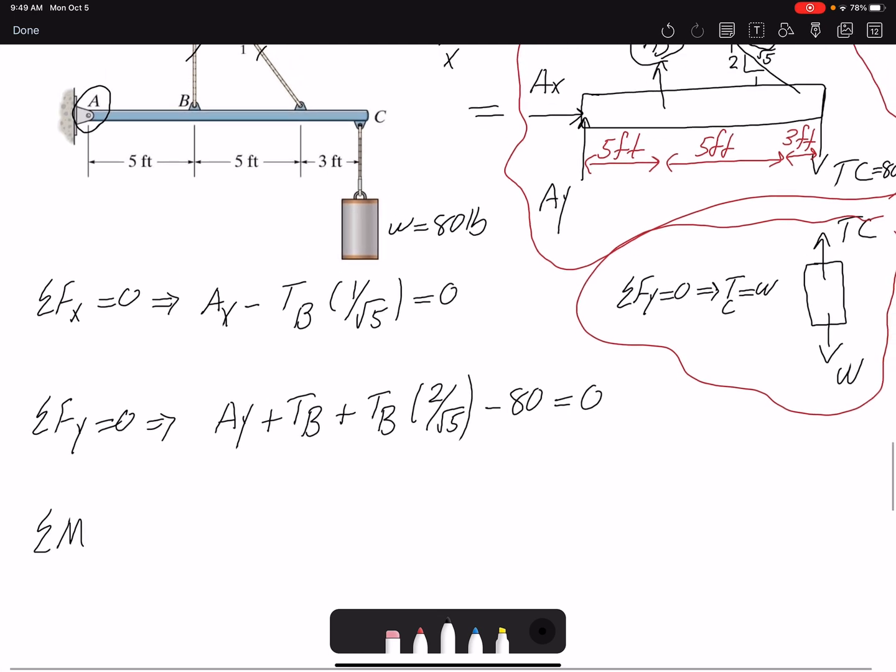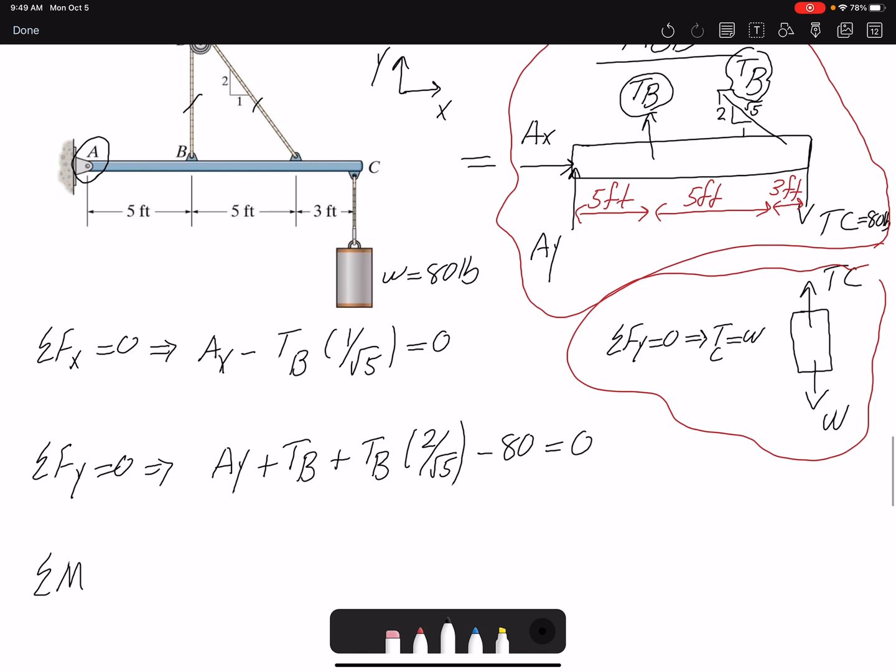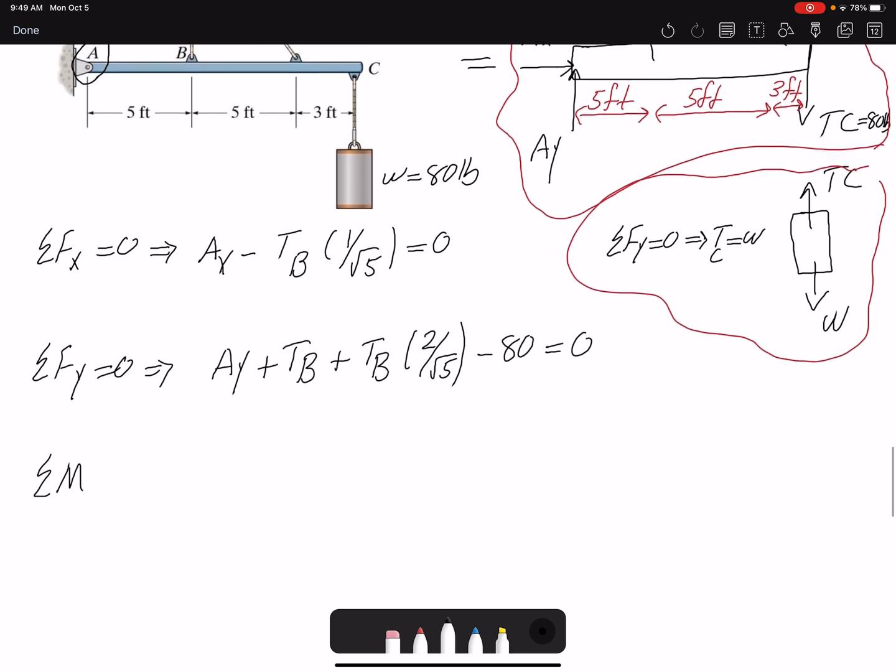I can write a moment equation about any point, whether there is a force acting at that point or not, whether it's on the beam or off the beam. But if you look at the problem, we can see it's easier to write it about point A. We get rid of two forces, Ax and Ay. So let's do that: summation of moment about point A equals zero, counterclockwise positive.